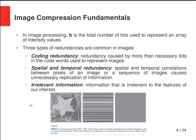Finally, we can have irrelevant information, which is information irrelevant to the features of interest. Here you can see three different examples, each containing one of these redundancies: one with coding redundancy, one with spatial redundancy, and one containing irrelevant information.